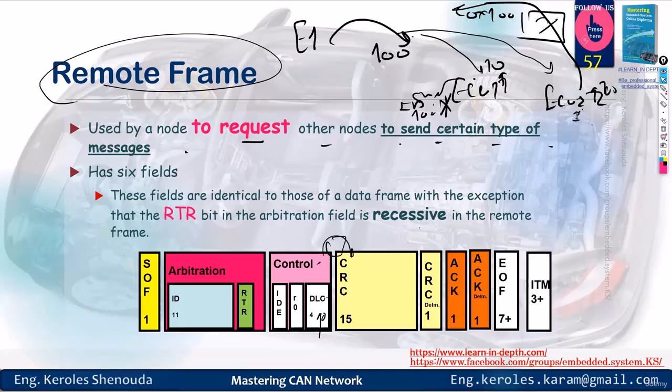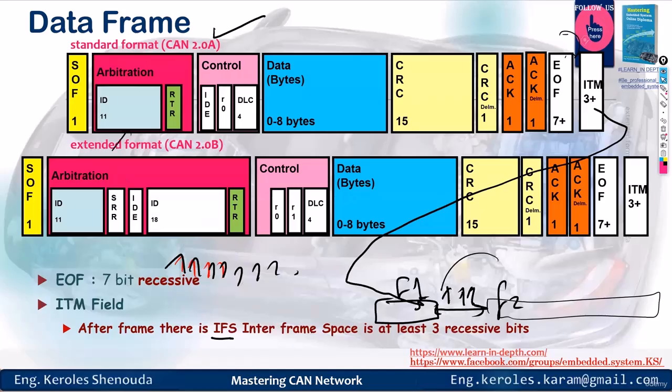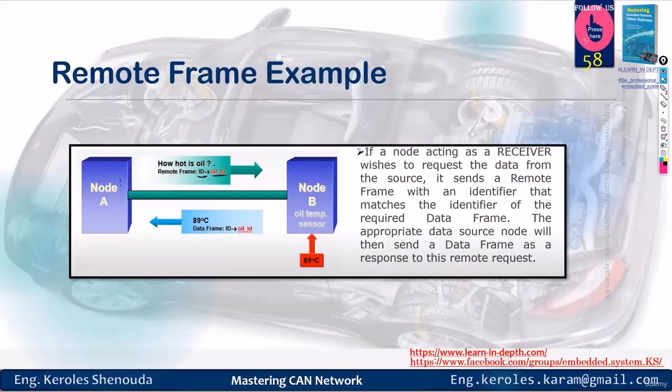The remote frame doesn't carry data. That's why you'll find its DLC always has a value of 0. Of course, the RTR here, its bit value is 1. Also, a remote frame can either have a standard ID, or an extended ID. For instance, the remote frame here is asking how hot is the oil, and it sent the oil ID, which is the ID this node always sends with, meaning this node constantly sends with ID oil ID. So, when node B saw this, it went on to send the data frame to node A, just as you can see.